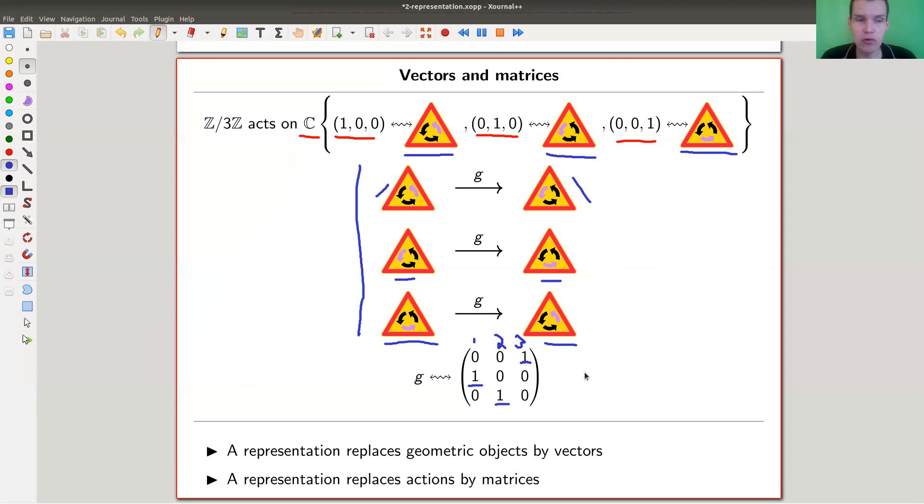And the only thing I did is I identified my action space with a vector space, and then I get the matrix from my group. So a representation really replaces geometric objects by vectors, that's what I just did, or vectors by geometric objects, some analogies between vectors and geometric objects, and actions by matrices. And now, hell yeah, everything is linear. There are matrices everywhere and vectors and you can apply linear algebra tricks and it's really good.